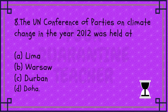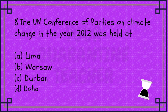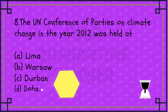Next question: The UN Conference of Parties on Climate Change in the year 2012 was held — Option A Lima, Option B VASA, Option C Durban, Option D Doha. The answer is Option D, Doha.